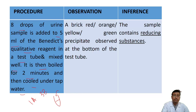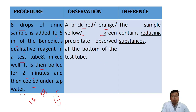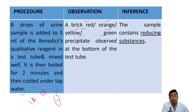The observation: a brick red, orange, yellow, or green precipitate is observed at the bottom of the test tube. Be very careful — these are the possibilities; in your experimental setup you will get only one colour. Do not mention all these colours as alternatives; you will get only one.